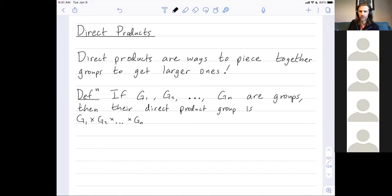First, let me tell you what the elements are and then I'll tell you what the group operation is. This group's elements are things of the form little g1, little g2, ..., all the way up to little gn, where element little gi is in the group capital Gi.